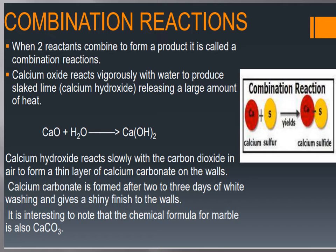Calcium hydroxide reacts slowly with carbon dioxide in air to form a thin layer of calcium carbonate on the walls. Calcium carbonate is formed after two to three days of white washing, and it gives a shiny finish to the walls. It is interesting to note that the chemical formula for marble is also calcium carbonate. So combination reactions are those in which two reactants combine to form a new product.